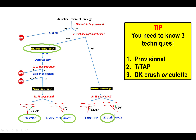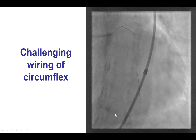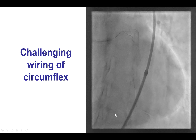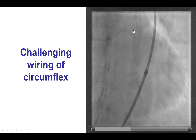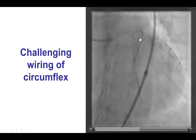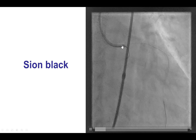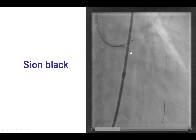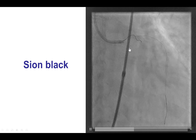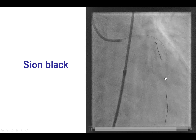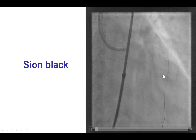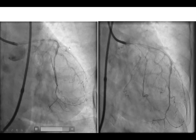The technique we use in our lab for such cases is most often the DK crush technique. For any bifurcation technique, the first step is to wire both vessels. The LAD was quite easy to wire with a workhorse wire, but the circumflex was challenging and the workhorse wire was not successful. One option would be to use a microcatheter to help support the guide wire; another option is to use a polymer-jacketed wire. A Sion Black successfully navigated through the tortuous circumflex, formed a loop, and advanced to the distal vessel without selecting any side branches. Both vessels are now wired.